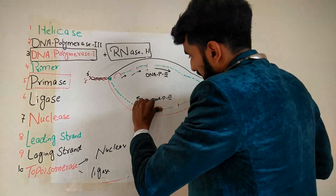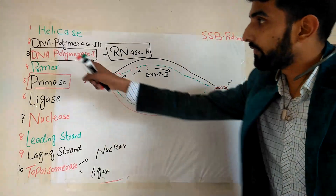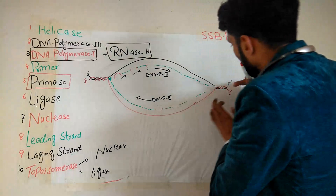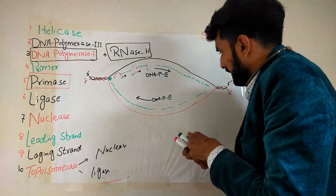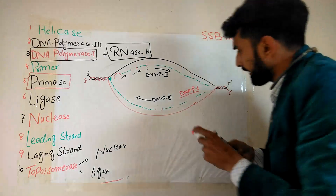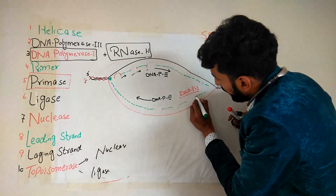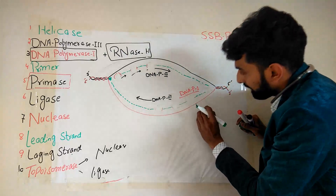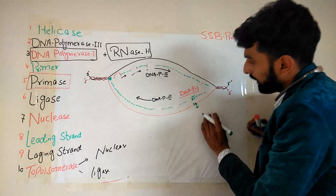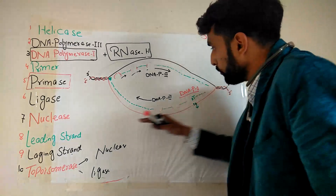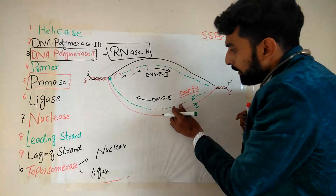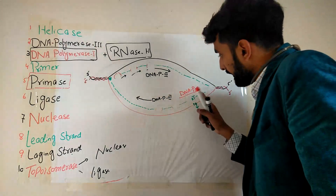RNase H removes the primer. Once the primer has been removed, DNA polymerase 1 — which can move in the 3' to 5' direction — will move in and add nucleotides against the parent strand. For example, if there is A, it places T; if there is T, it places A. DNA polymerase 1 keeps adding nucleotides in the 3' to 5' direction to fill the space left by the removed primers.